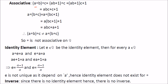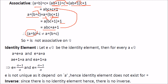For associativity: (a star b) star c equals (ab plus 1) star c equals (ab plus 1)c plus 1 equals abc plus c plus 1. But a star (b star c) equals a star (bc plus 1) equals a(bc plus 1) plus 1 equals abc plus a plus 1. Since abc plus c plus 1 is not equal to abc plus a plus 1, star is not associative on Q.